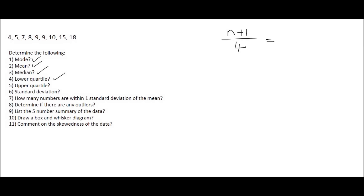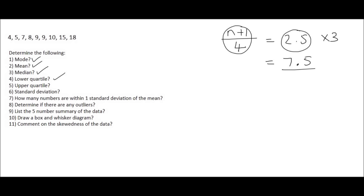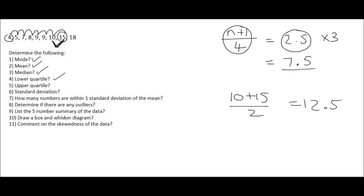To find the upper quartile, we use n plus one divided by four which gives us 2.5, but since we want the third quarter we multiply by three, giving us 7.5. Going to position 7.5 — positions one through seven, and then 15 would be eight — it falls between those two. The number halfway between them is 12.5; you add the two numbers together and divide by two to get 12.5.